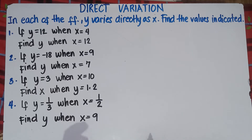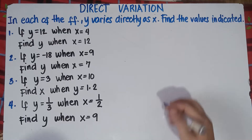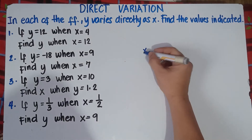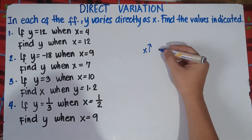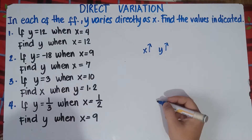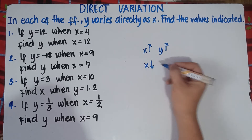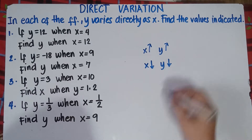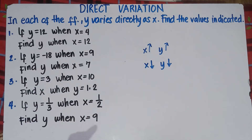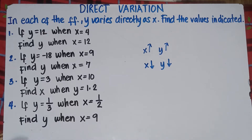Now before answering this one, class, you need to understand what is direct variation. In direct variation, if your x increases, your y also increases. If your x decreases, your y also decreases. So x is directly proportional to y, or y is directly proportional to x.